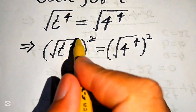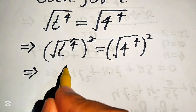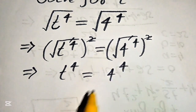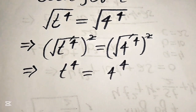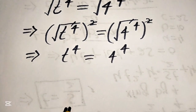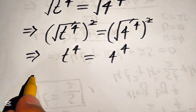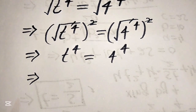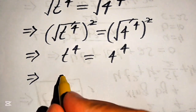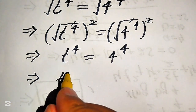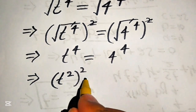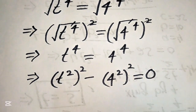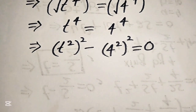When we square both sides, the square root signs cancel. On the left we get t to the power of 4, and on the right we get 4 to the power of 4. This is now a fourth-order equation. We move 4 to the power of 4 to the left side and rewrite: t squared, whole squared, minus 4 squared, whole squared, equals zero.